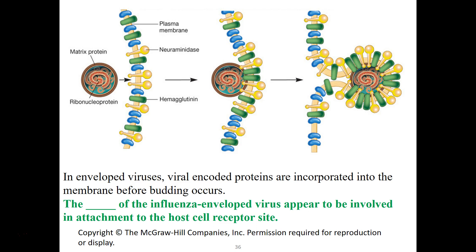Hemagglutinin is the influenza envelope protein involved in attachment to the host cell receptor. It attaches to the receptors on our host cells. Neuraminidase, when it gets into the cell, shuts down the receptors that hemagglutinin binds to. So influenza is nasty — only one virus per cell. Once that virus gets in, it shuts down the ability of more viruses to get into that cell.